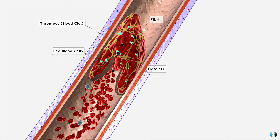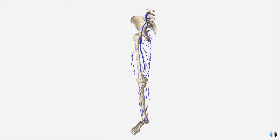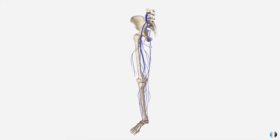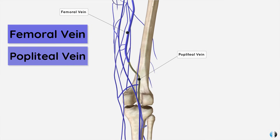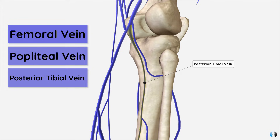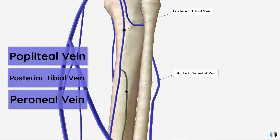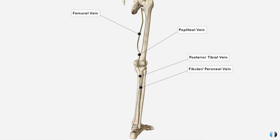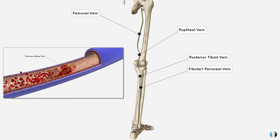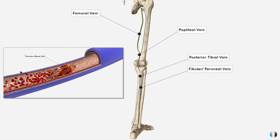In a deep vein thrombosis, the veins affected are not those veins you can see on the surface of your skin, but much deeper within our limbs and body. The most commonly affected veins are within the legs — the femoral vein, the popliteal vein, the posterior tibial vein, and the perineal veins. 90% of all DVTs are in the lower limb and around 10% in the upper limb, because blood more easily pools within the veins of the lower limb, and when blood remains stationary, it is more likely to activate the clotting pathways to form a clot.